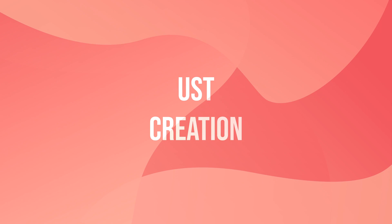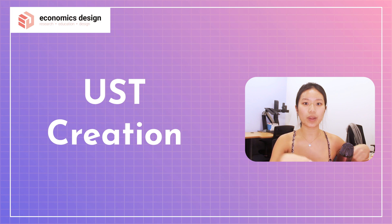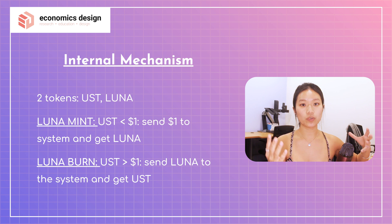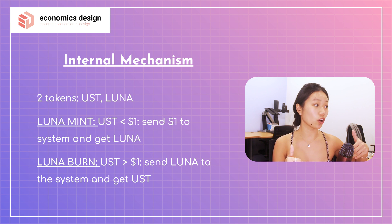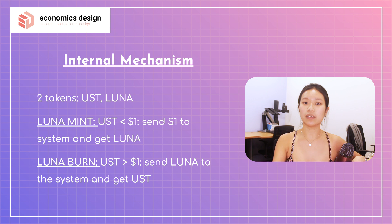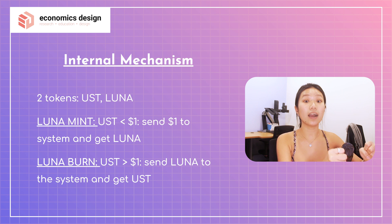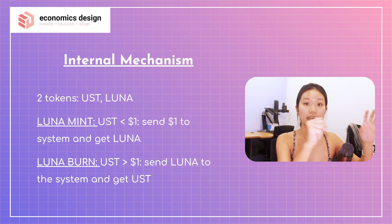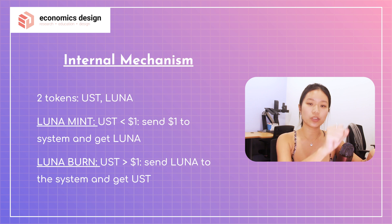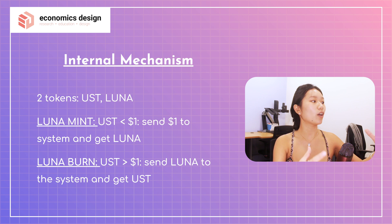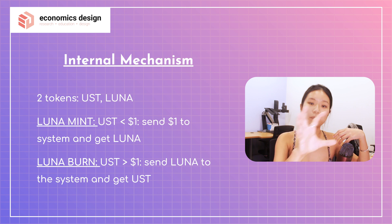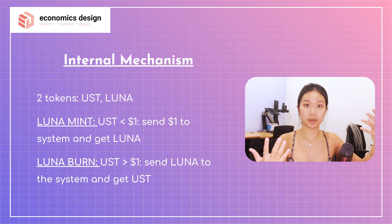So how is UST created? There are two tokens: UST and Luna. When UST is less than a dollar — say, 90 cents instead of $1 — you take your UST, go to the Terra network, and say you want to exchange it for Luna. The system will always value UST at $1, so you give it to the system, create Luna, and destroy UST. When you destroy UST, supply goes down and the value of the remaining UST goes up. That's the relationship.